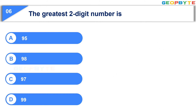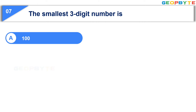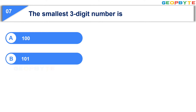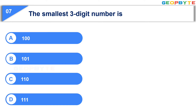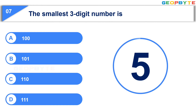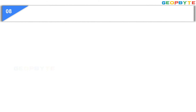Your time is up and the correct answer is Option D: 99. The seventh question is: The smallest 3-digit number is — Option A: 100, Option B: 100, Option C: 110, Option D: 111. Your time starts now. Your time is up and the correct answer is Option A: 100.